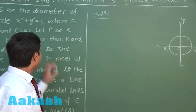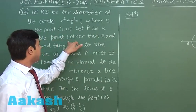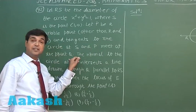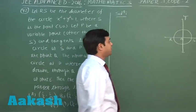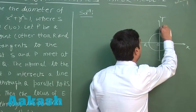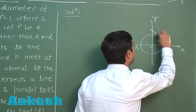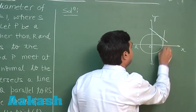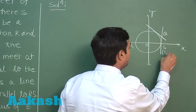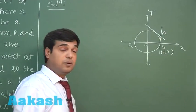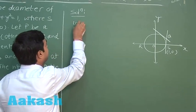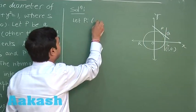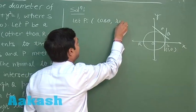Next, P is a variable point and tangents to the circle at S and P meet at point Q. Let us take a general point on the circle. Drawing a tangent at P and a tangent at S — these are intersecting at point Q. Point S is known: (1, 0). So we can say let P be the point (cos θ, sin θ).